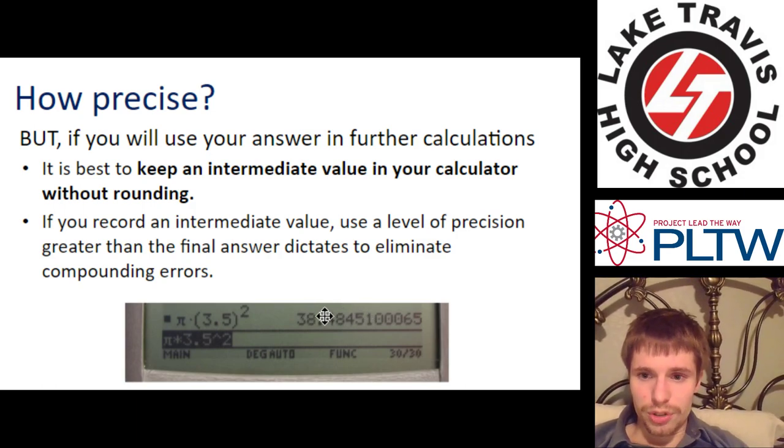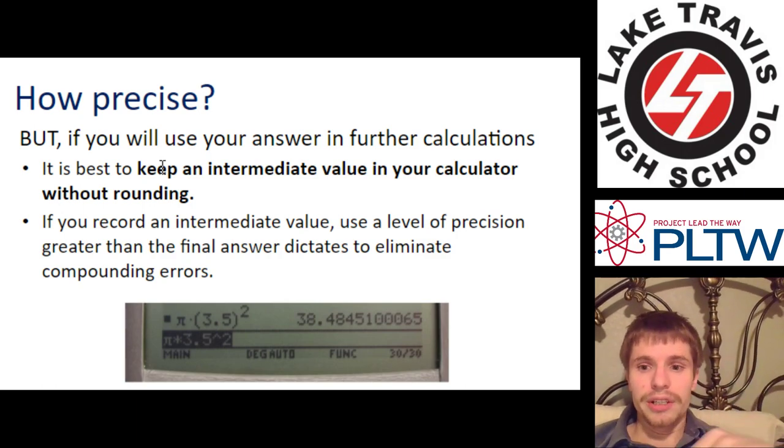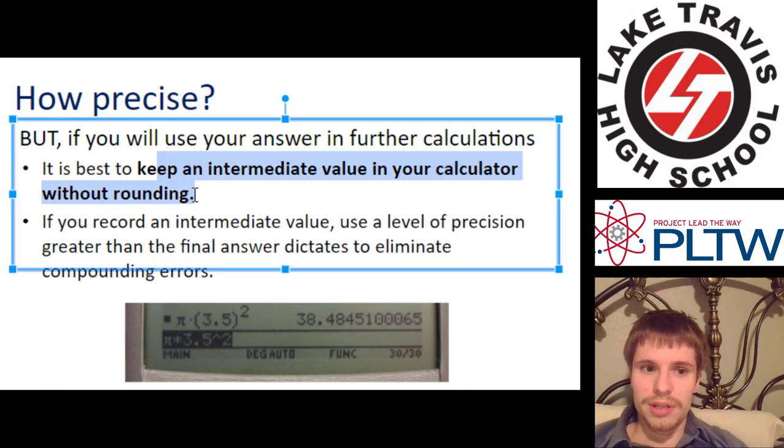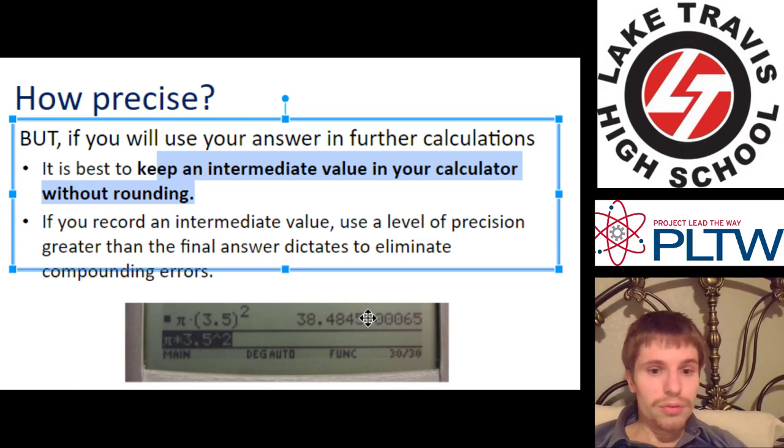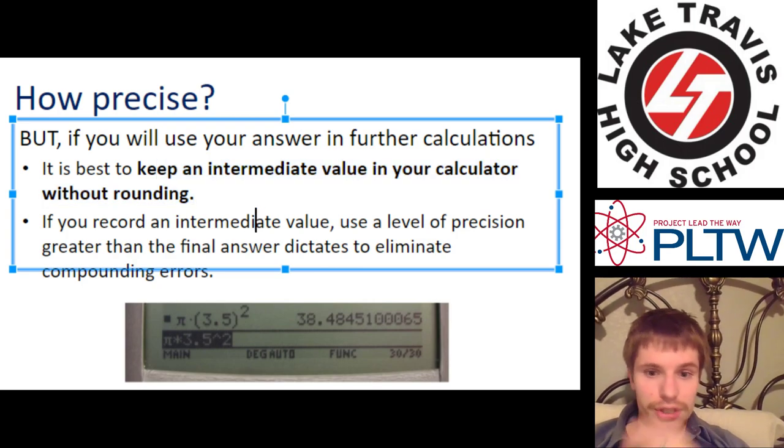But the calculator spits out all these digits, all these decimal places. Not all of them are significant. But whenever you're doing lots of calculations, this is important. I'd write this down. Keep an intermediate value in your calculator and don't round. Don't round this until the very end. Don't round until the very end when you're doing lots of calculations.